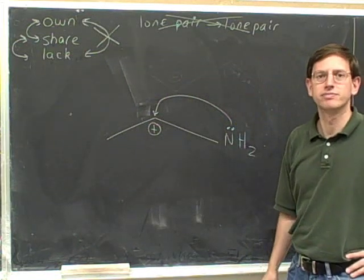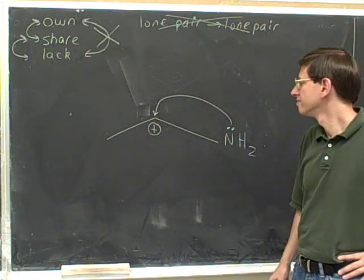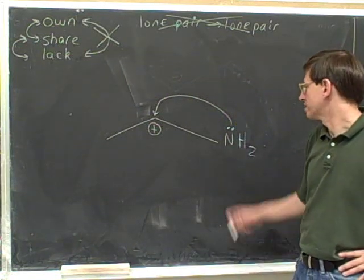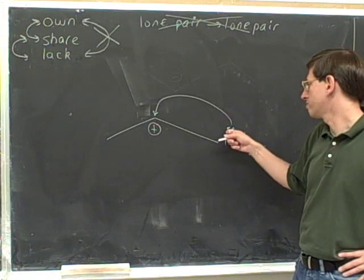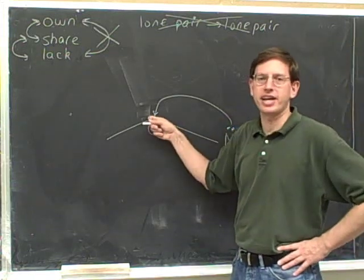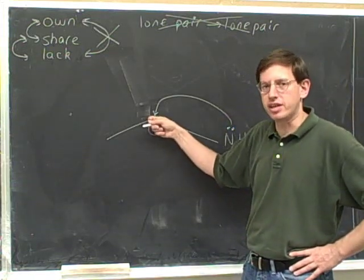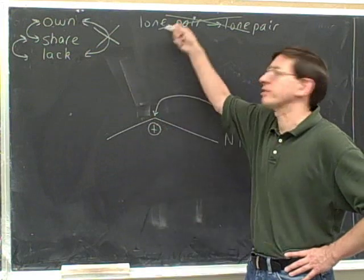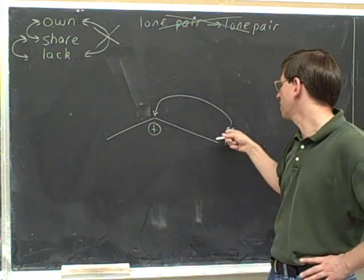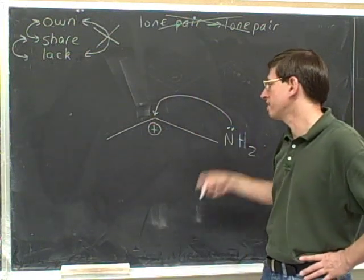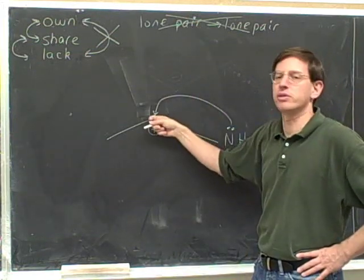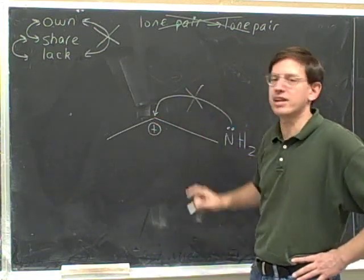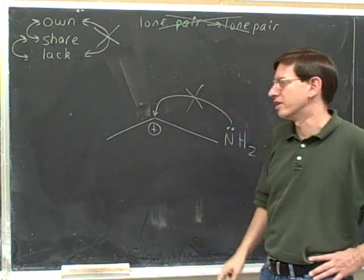Is this legal? No, because the tail is at a lone pair and the head is pointing directly at an atom, which means that it's forming a lone pair. But this is just what we said you can never do — you can never take a lone pair on one atom and make it into a lone pair on another atom. So this is illegal; you're not allowed to draw this arrow.